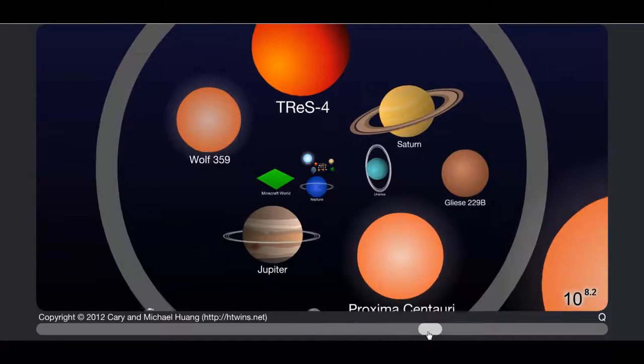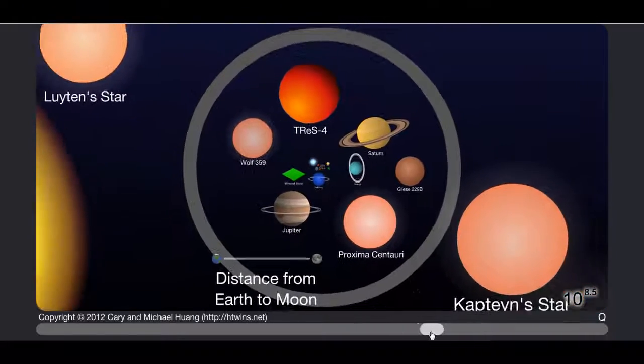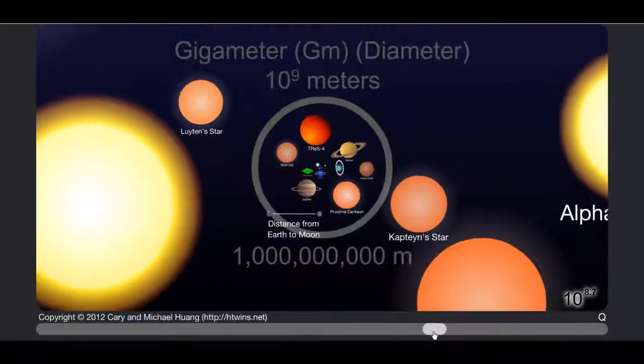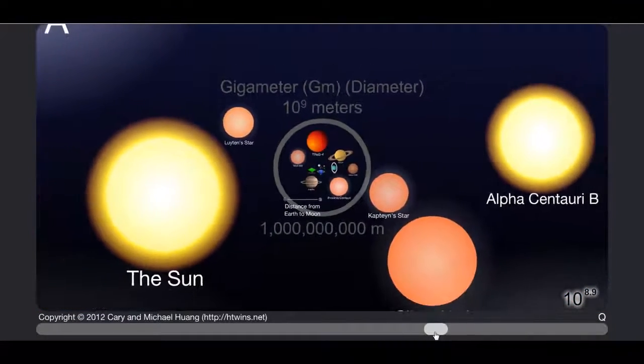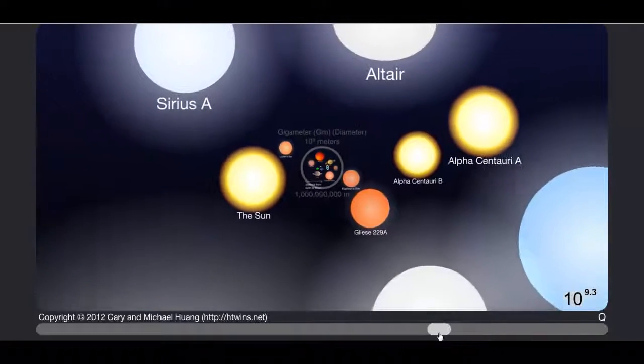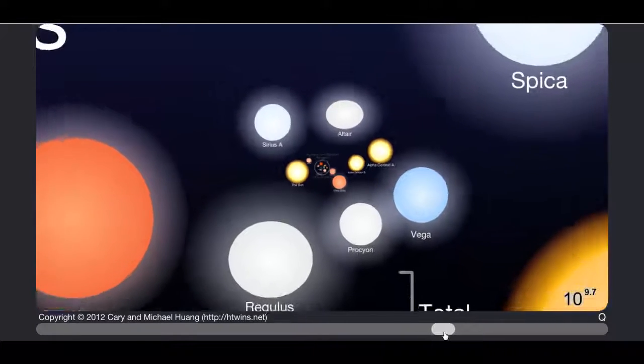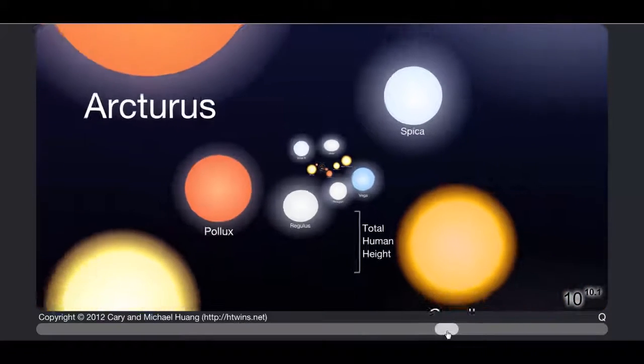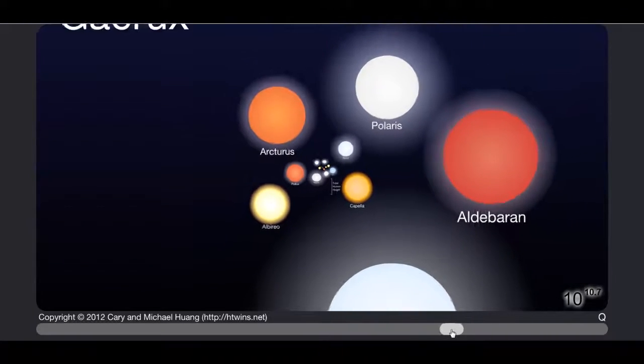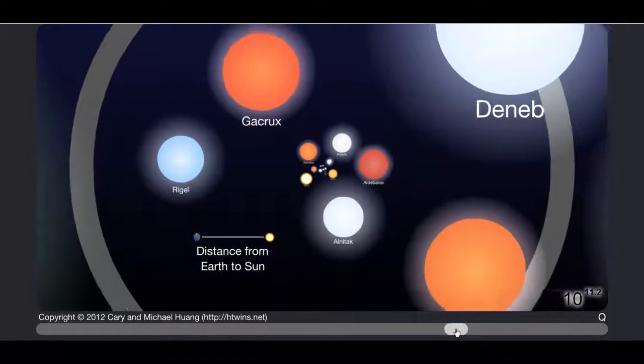Jupiter, Saturn, TrES-4, Proxima Centauri. Distance from the Earth to the Moon. Man look how far we've gone all the way from the string and the DNA thing down there to after the sun. We've still got a long way to go here. Arcturus, Polaris. Wow. Distance from the Earth to the sun.